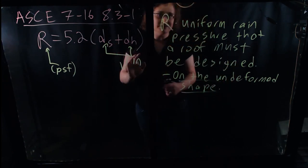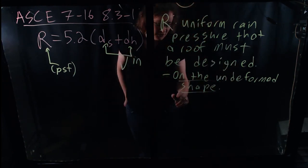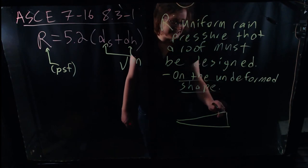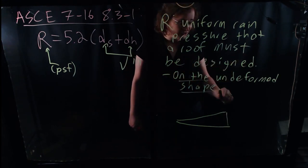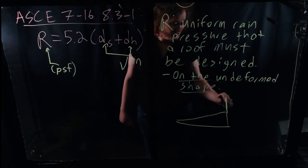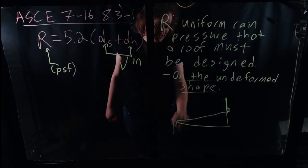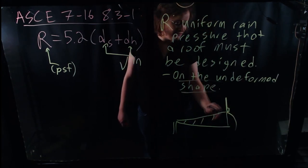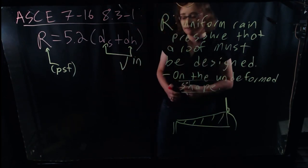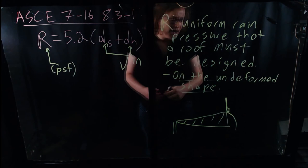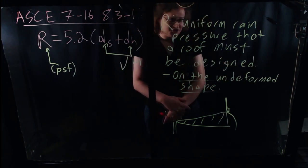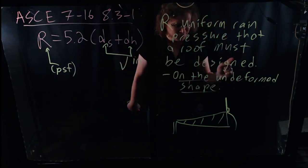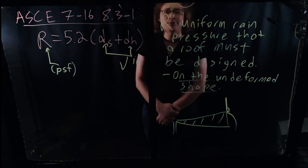Note that this is conservative. In reality, if you have that kind of slope with an outlet here and a primary drain here, a secondary drain here — this is assuming this entire volume ends up filled. At first that may seem overly conservative, but we're talking about very, very, very shallow slopes, so it's actually not too bad when you look at some numbers. So you basically calculate this pressure and apply it over the entire roof.